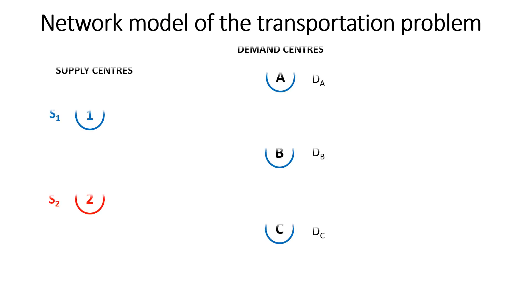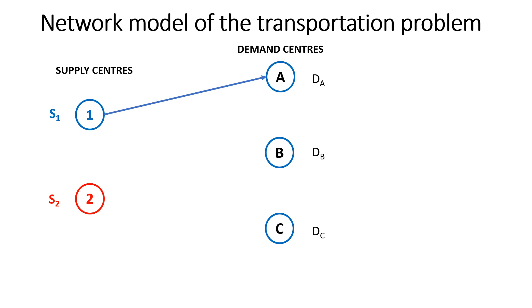There are several ways of representing the transportation problem. One such approach is to use the network model. For the example with two supply points and three demand centers, the network takes a specific structure where you use arrows to denote the routes connecting each supply point to each demand center. On the route connecting supply point one and demand center A, X1A denotes the number of units shipped on that route, and C1A denotes the cost per unit of shipping along this route.